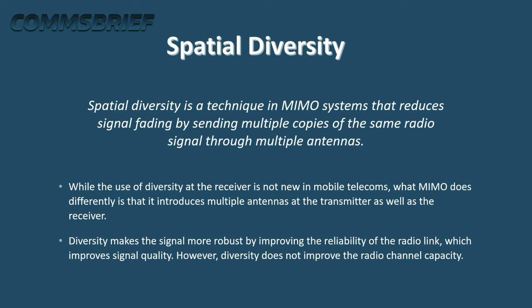While the use of diversity at the receiver is not new in mobile telecoms, what MIMO does differently is that it introduces multiple antennas at the transmitter as well as the receiver.